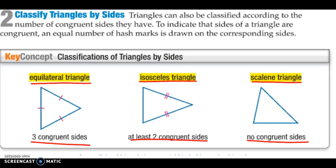So we have equilateral, all three sides the same. Isosceles, two sides the same. Scalene, no sides the same.